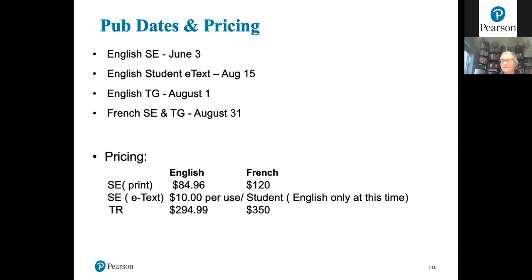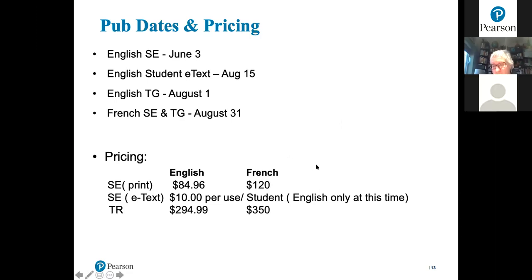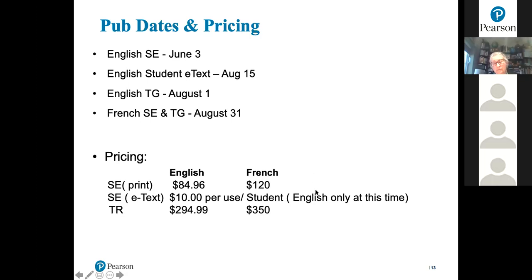A question was asked about how current the data, stats, and information in the book are. The data is as recent as available from the source. For example, census data is only released on certain dates. Throughout the book, data ranges from 2018 to 2020, depending on the source.